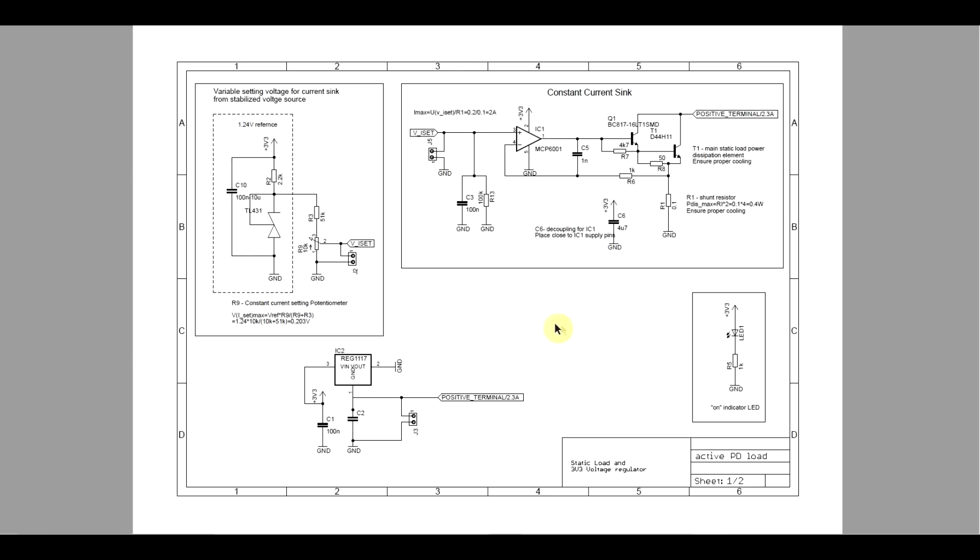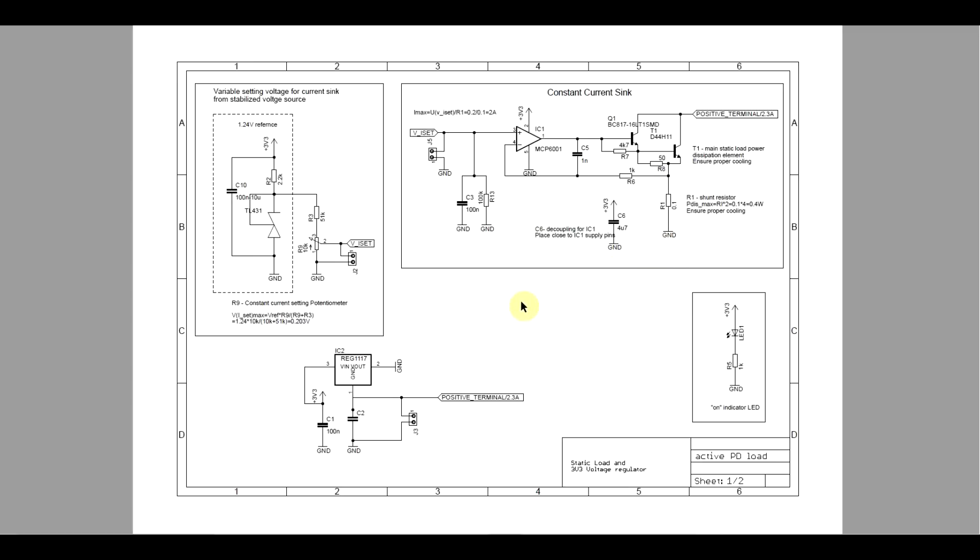Now in particular, the circuit that I will be using today for the various tests looks like this. So the static part is built with a constant current sink, which is getting a signal through a potentiometer from a voltage reference. So this circuit allows the setting of the constant current part. And then for the dynamic current part, I have a 50% duty cycle oscillator built around the TLC555C, and with a potentiometer I can set the frequency.